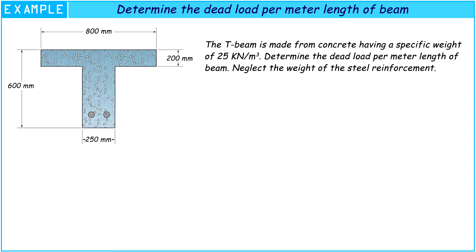We need to find the dead load per meter length of the beam. From the story above, we noted that the weight of the steel reinforcement in concrete is neglected. So, we have specific weight of concrete equal to 25 kN per cubic meter.